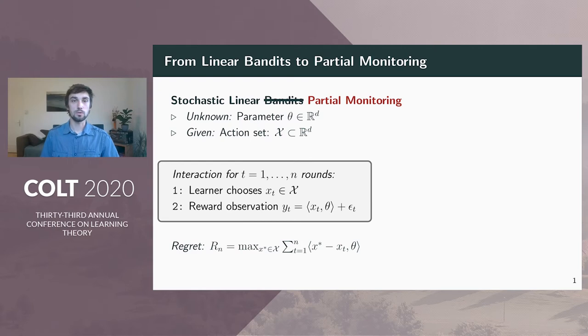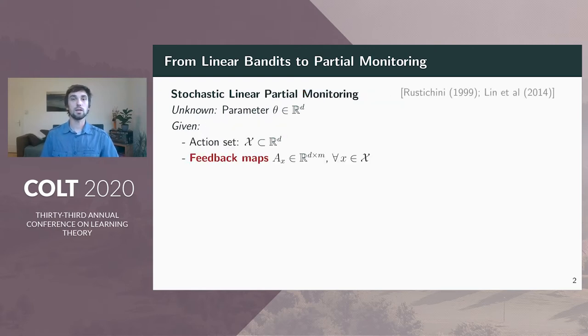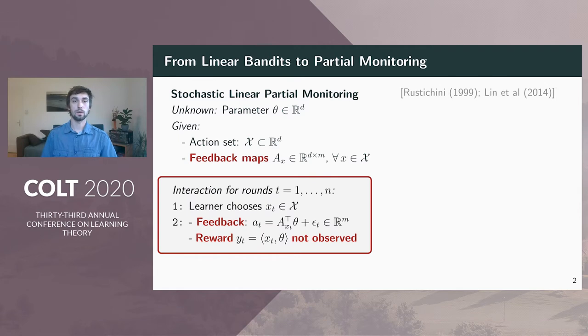Let's move on to linear partial monitoring. As in a bandit setting, the learner has access to a set of actions and associated features. In addition, each action has an associated feedback map denoted by a_x, which is also given. Again, the learner interacts with the environment over n rounds and the learner chooses one of the actions at the beginning of each round.